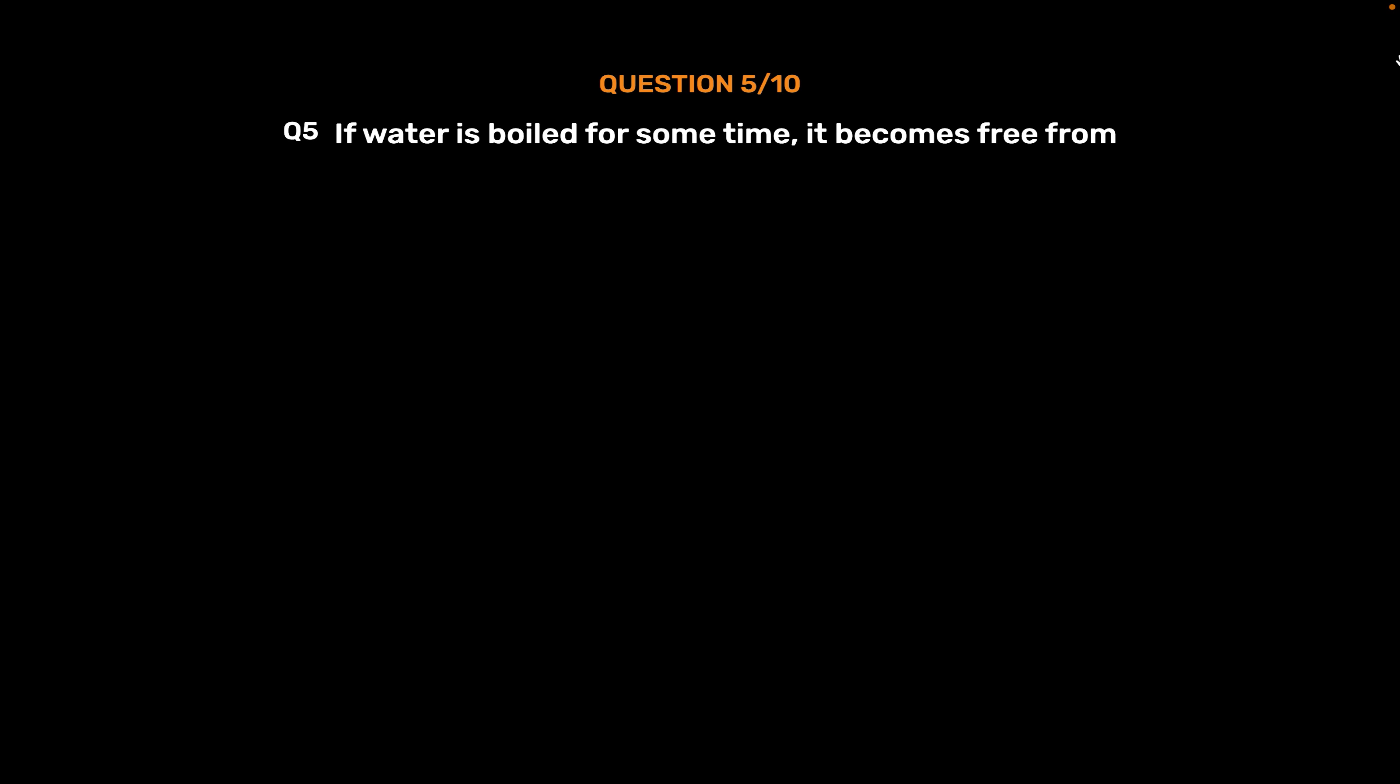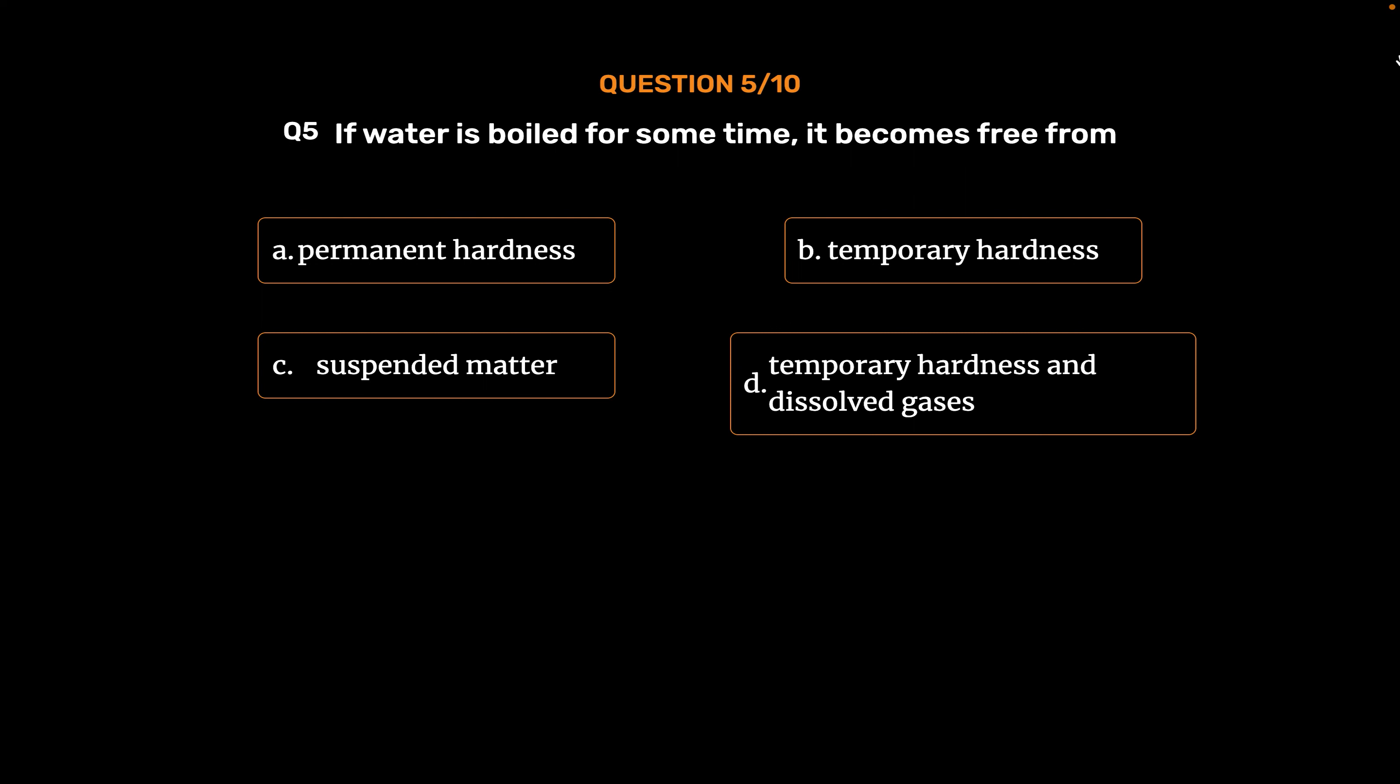Question number 5: If water is boiled for some time, it becomes free from. Option A: Permanent hardness. Option B: Temporary hardness. Option C: Suspended matter. Option D: Temporary hardness and dissolved gases. The correct answer is Option D: Temporary hardness and dissolved gases.